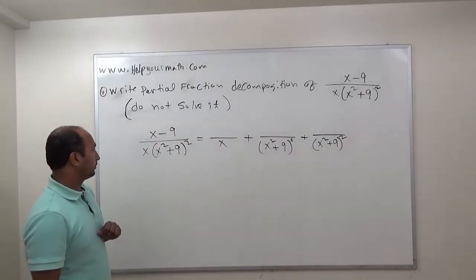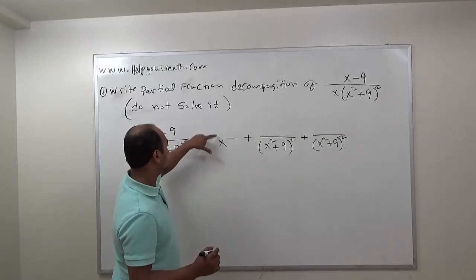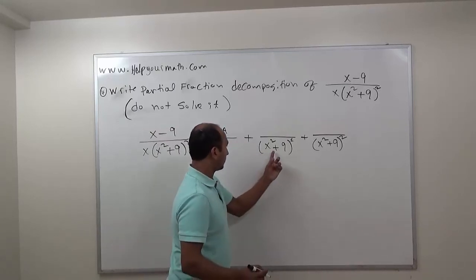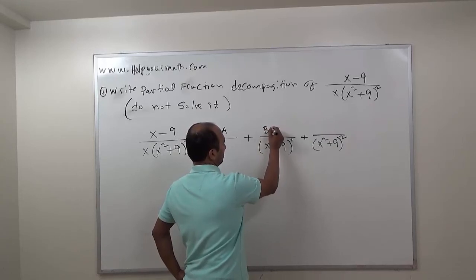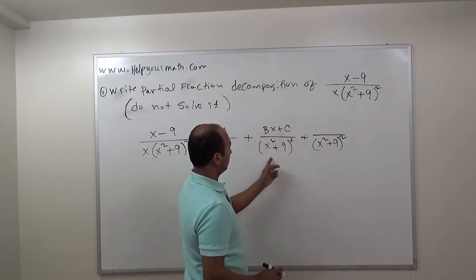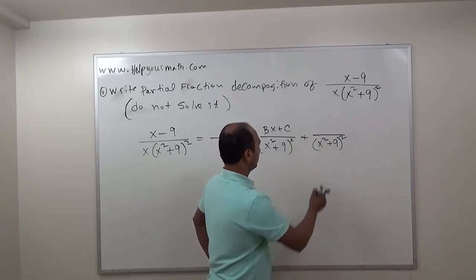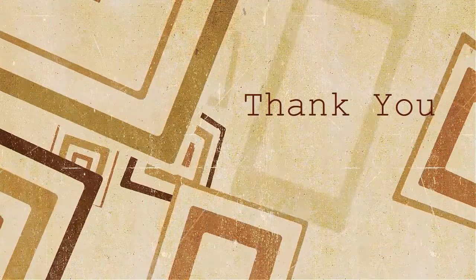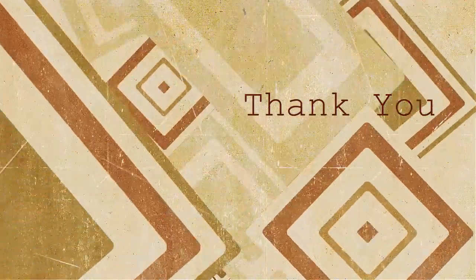Now we write the constants on top. The degree difference should be one for each factor. x is a linear first-degree term, so we write A. For x squared plus 9 to the first power, it's second degree, so the degree difference is one — we write Bx plus C. For x squared plus 9 squared, it's also second degree, so the degree difference should be one — we write Dx plus E.